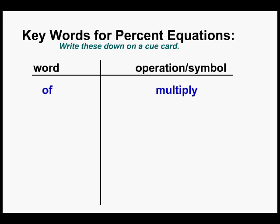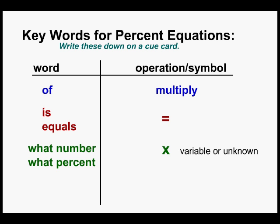The first word we're going to look at is 'of'—'of' means to multiply. The next word is 'equal' or 'is'—we're going to write an equal sign. The next word is 'what number' or 'what percent'—we're going to write an X or variable for the unknown. And finally, when we see the word 'percent,' we're going to write a percent sign.